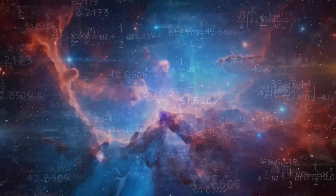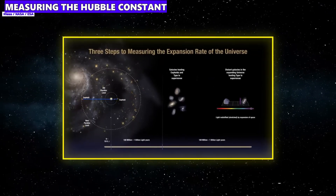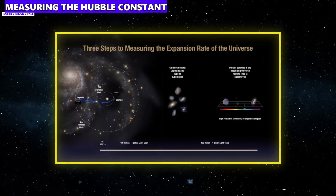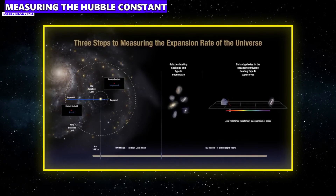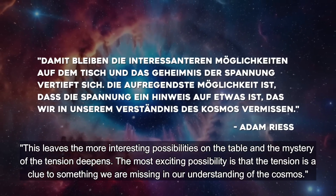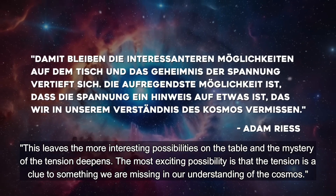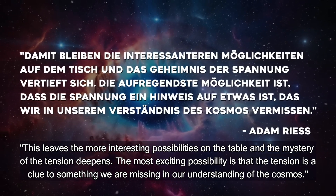Some might ask: so nothing new was measured? But these findings are quite significant at second glance, because they show that the Hubble tension cannot be explained by the fact that our cosmic glasses were simply too bad — that we couldn't see well enough. It shows that the Hubble tension is real and there's definitely something wrong with our understanding of cosmic expansion. Adam Riess said: this leaves the more interesting possibilities on the table, and the mystery of the tension deepens. The most exciting possibility is that the tension is a clue to something we are missing in our understanding of the cosmos.